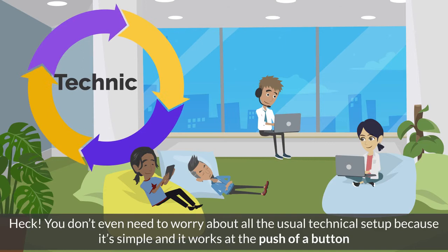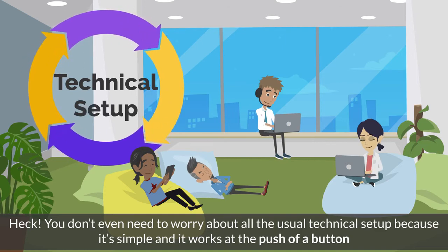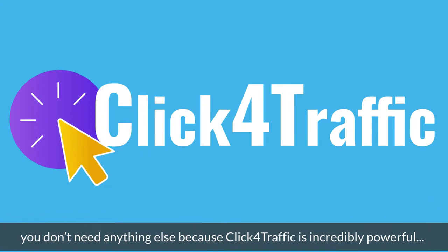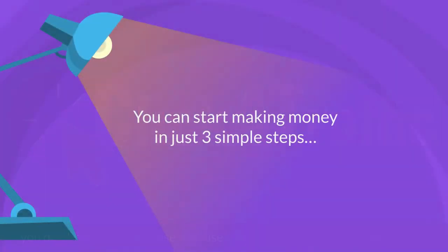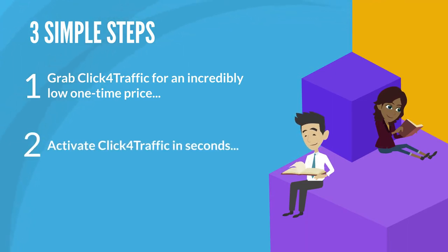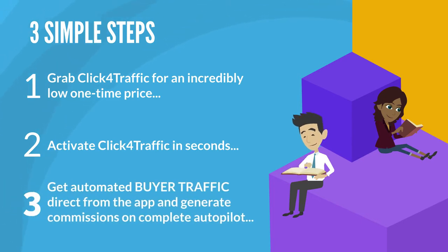You don't even need to worry about all the usual technical setup because it's simple and works at the push of a button. You don't need anything else because Click4Traffic is incredibly powerful. You can start making money in just three simple steps: step one, grab Click4Traffic for an incredibly low one-time price; step two, activate Click4Traffic in seconds; step three, get automated buyer traffic direct from the app and generate commissions on complete autopilot.